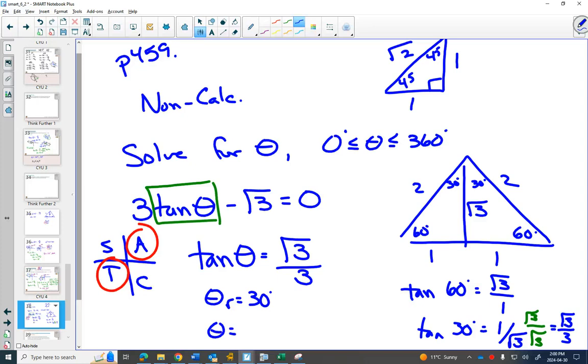Then solving for theta, in quadrant 1, if the reference angle is 30, the angle is 30. That's easy. In quadrant 3, can you see you would go 180 plus your reference angle of 30? And get 210 degrees.